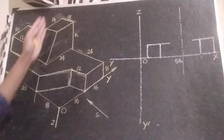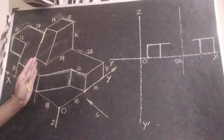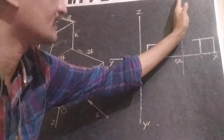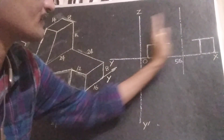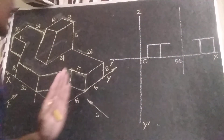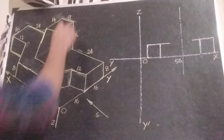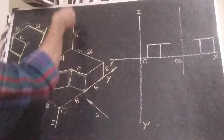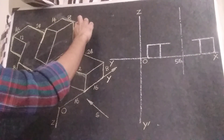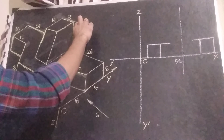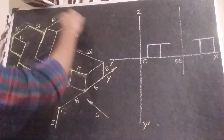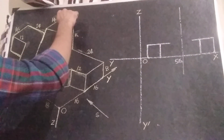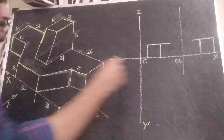From the line that divides the entire front view into two halves, we can draw that pillar — this pillar — having a height of 16 mm and a width of 8 mm.